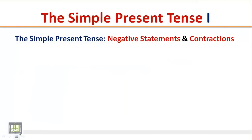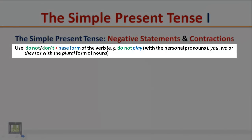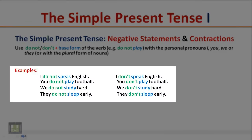The Simple Present Tense: Negative Statements and Contractions. Use 'do not' or 'don't' plus the base form of the verb with I, you, we, or they, or with plural nouns. Examples: I do not speak English / I don't speak English. You do not play football / You don't play football. We do not study hard / We don't study hard. They do not sleep early / They don't sleep early.